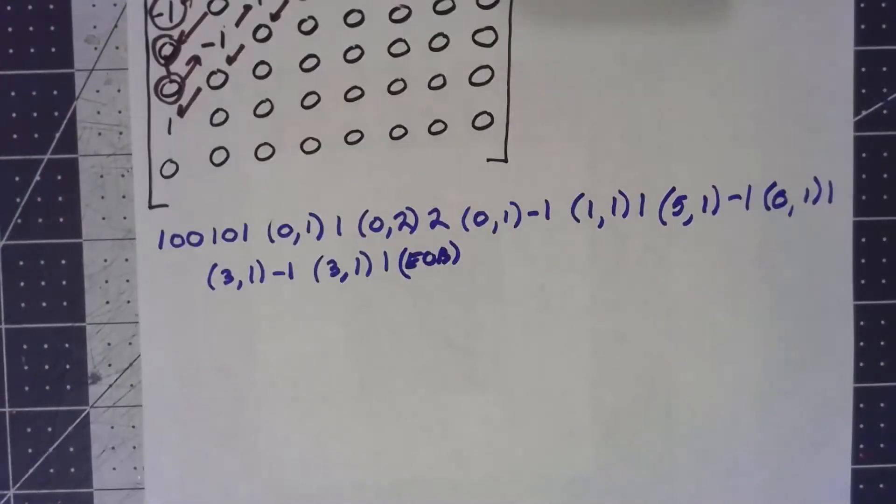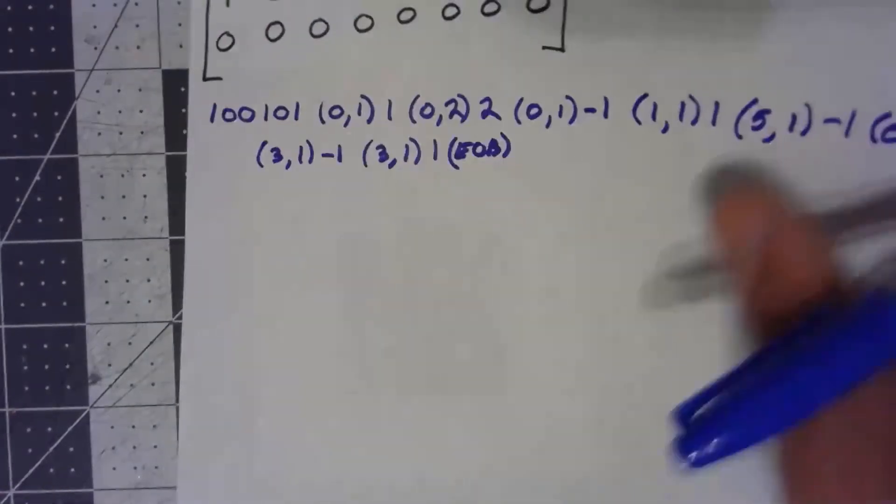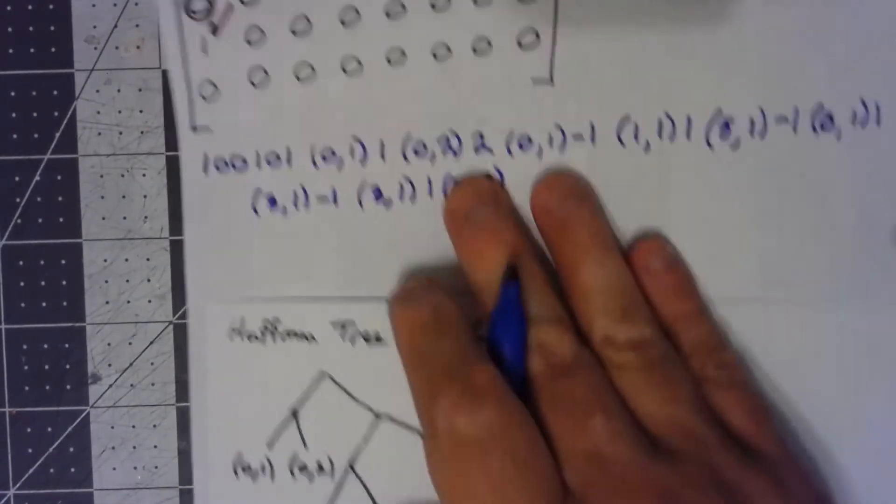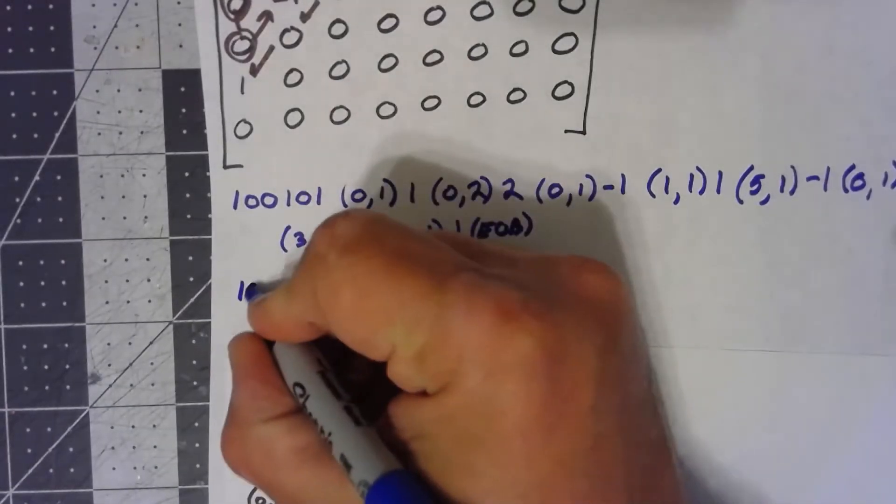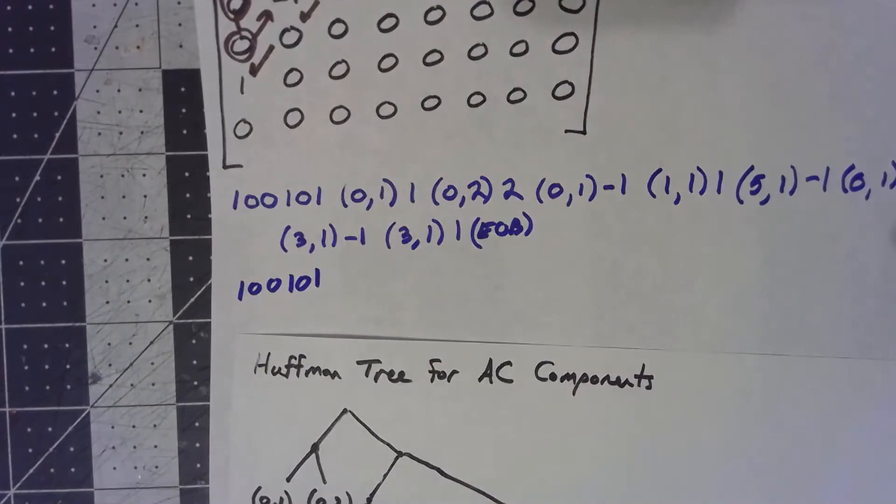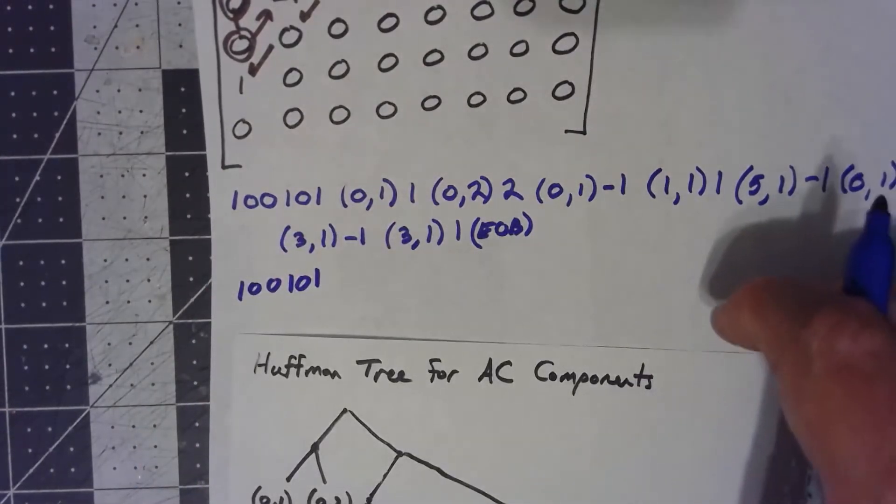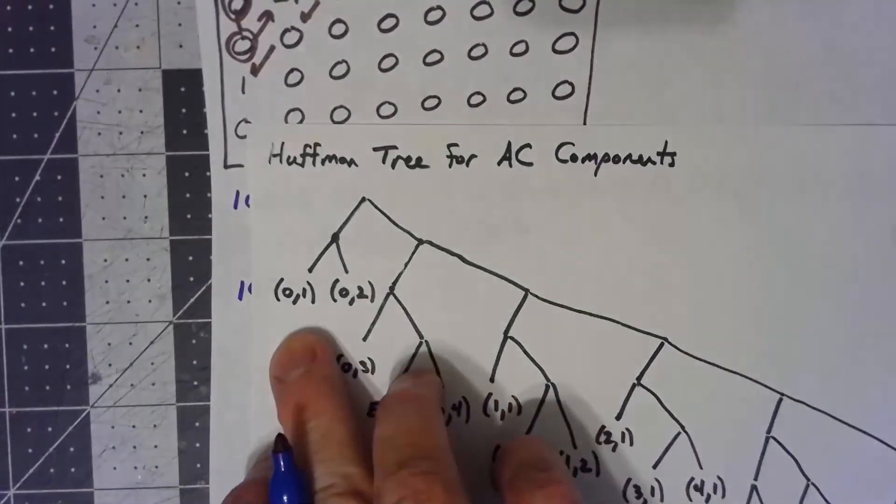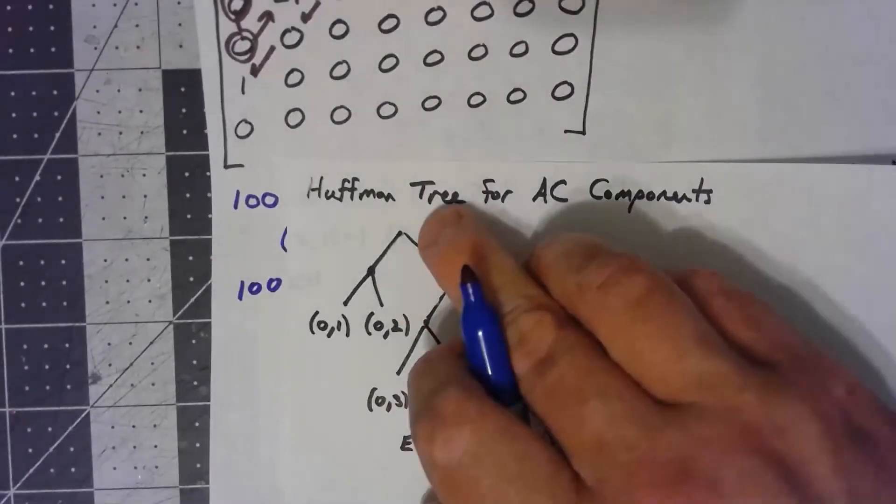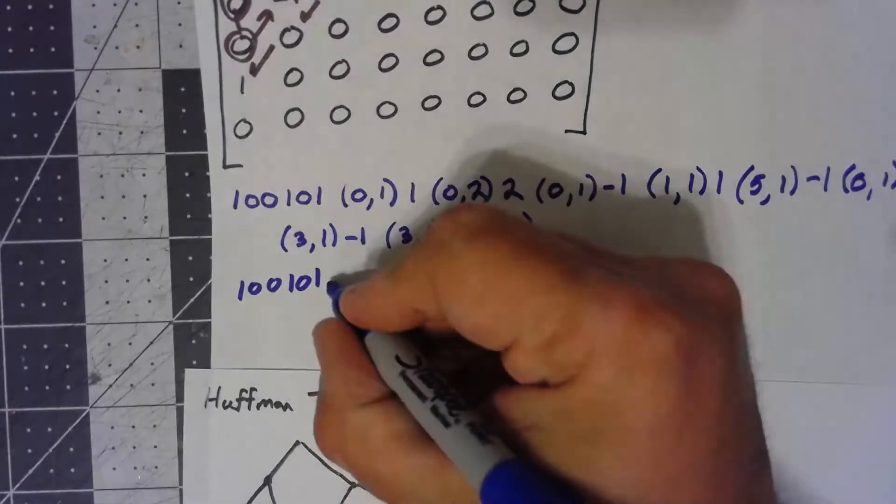Okay, so, how does this come out? Well, okay, we have the one, zero, zero, one, zero, one from the DC component. We need to code a zero, one was the first part here. Zero, one is left, left. So, zero, zero.